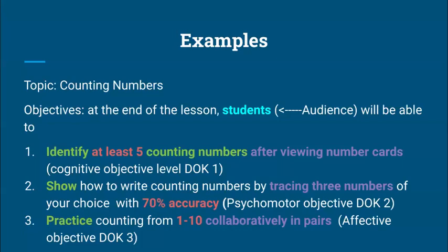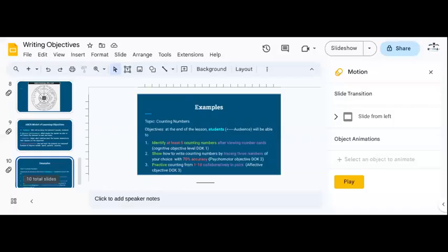I do hope everybody learned something from this. Recapping: objectives should be SMART. Objectives should target all three domains — the cognitive, the affective, and the psychomotor. And the learning objective should be progressive — you take the students from step one through to step five, taking them from simple to more complex so that learning is constructed. Make sure to use your ABCD model to keep your objective SMART: audience, behavior, condition, and degree. Thank you.